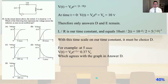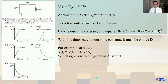Number 40. In the circuit shown, the switch S is closed at t equals 0. Which of the following best represents the voltage across the inductor as seen on an oscilloscope? V of t equals V0 times e to the minus t divided by L over R. At t equals 0, V of t equals V0 times e to the 0 equals the initial voltage, which equals 10 volts — so only answers D and E remain. L over R is our time constant and equals 10 millihenries divided by 2 ohms equals 5 milliseconds. At 5 milliseconds, V of t equals V0 times e to the minus 1 equals 0.37 times V0, which agrees with the graph in answer D.